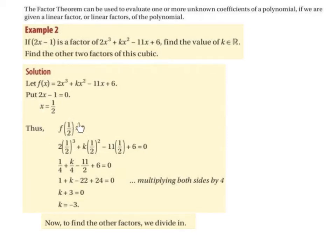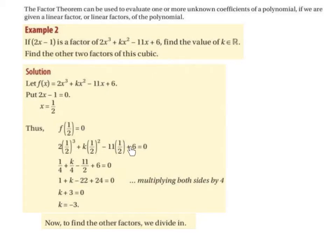Thus, f of a half should equal 0, so we're going to substitute a half in place of each of the x's. So 2x cubed becomes 2 times a half cubed, kx squared becomes k times a half squared, minus 11x becomes minus 11 by a half, and we have the plus 6 — and that's all equal to 0.